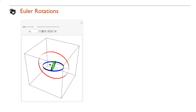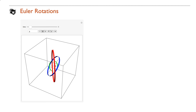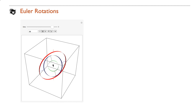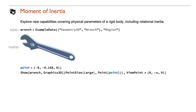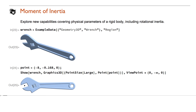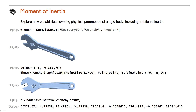Let's model a gimbal. Each Euler angle is the relative angle of turn for each axis. You can explore new capabilities covering physical parameters of a rigid body, including rotational inertia. Pick a point for the wrench to rotate about. The inertia matrix is centered at this point.